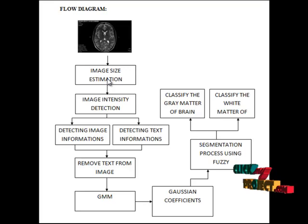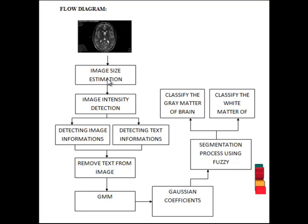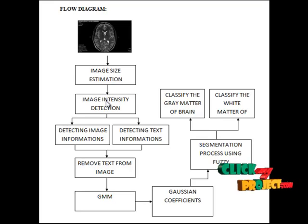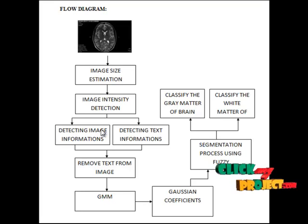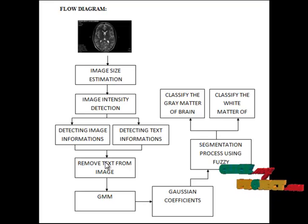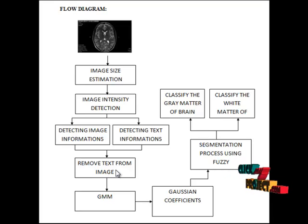For that process, in the first step, we initialize the brain image size — that is, we get the height and width of the brain image. In the next step, we check the intensity of the given image, which displays the histogram level of the given image. We extract the text information and image information separately, then remove the text information from the brain image. After removing the text information, we feed the result to the GMM algorithm.